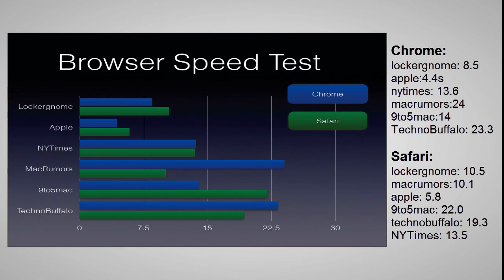9to5Mac took Chrome 14 seconds, while Safari took 22.0 seconds. Technobuffalo took Chrome 23.3 seconds to load, and Safari took 19.3 seconds.